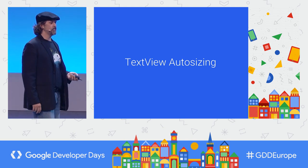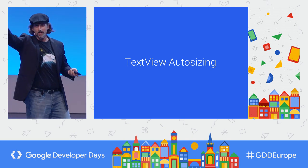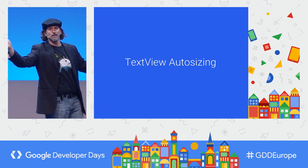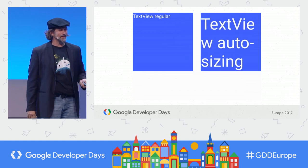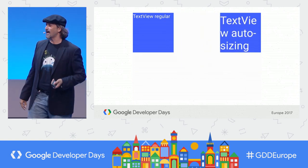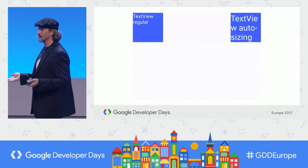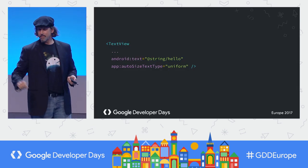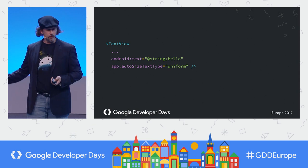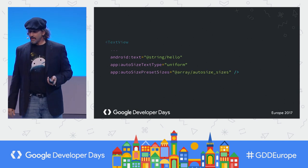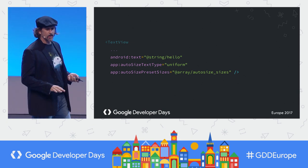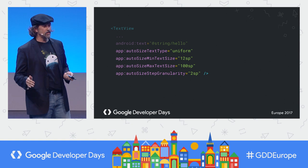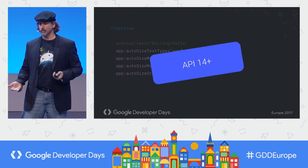Text view auto-sizing is a feature I've wanted for a long time. Text actually resizes to fill its container. You use the auto-size text type uniform, and you can either use an array of preset sizes, set a min and max size with a step. It's really easy, and we've brought this to API 14 plus.